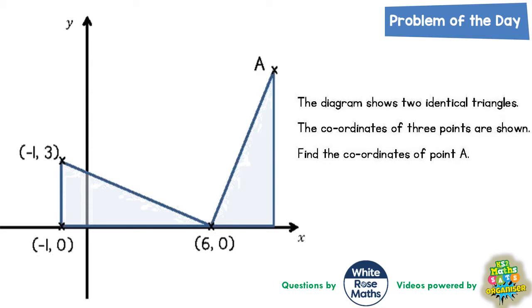The diagram shows two identical triangles. Now identical means exactly the same and that will actually be crucial later on, so that is a key word. The coordinates of three points are shown. Find the coordinates of point A.